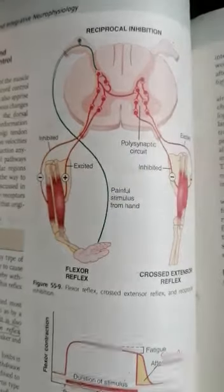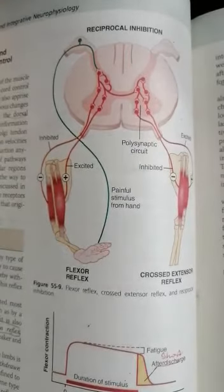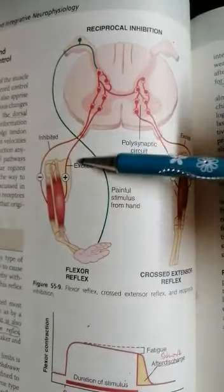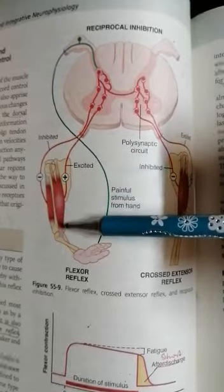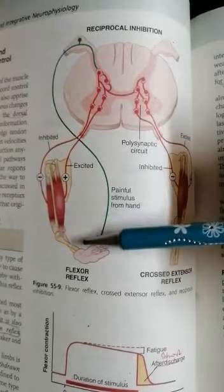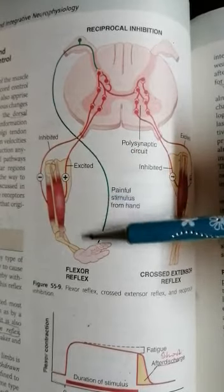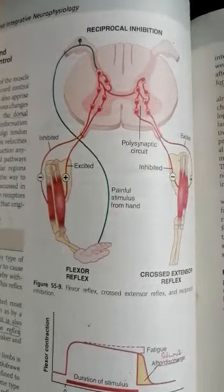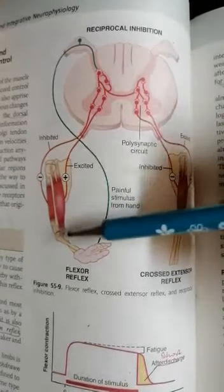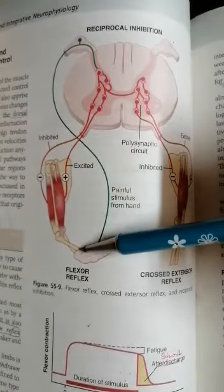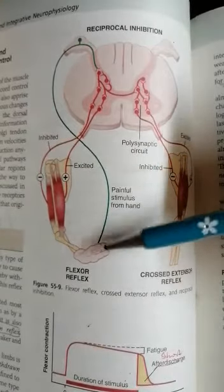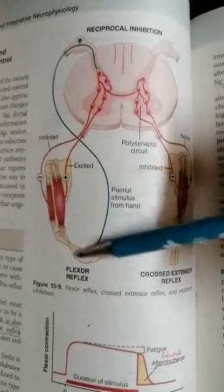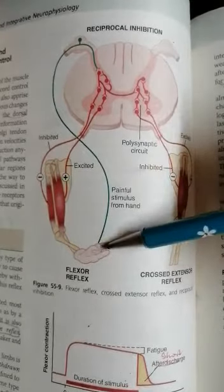When the excitatory stimulus is given to the flexor muscle, there will be contraction of the flexor muscle and there will be a withdrawal of the hand from the object. That is why this flexor reflex is also called the withdrawal reflex.